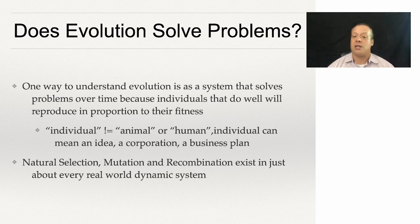Natural selection, mutation, and recombination exist in just about every real world dynamical system, right? Natural selection is the idea that the fittest individual survives with a higher probability than a less fit individual. Mutation is the idea that things change and morph over time. Recombination is the idea that we often combine different aspects of things together to create new solutions.